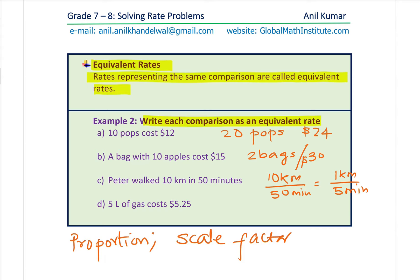The last one: 5 liters of gas will cost $5.25. You could write this as dollars per liter — $5.25 divided by 5 liters — which comes to $1.05 per liter. So you could write it the other way also. Rates have units — it could be written as 5 liters of gas costs $5.25, or $5.25 will buy 5 liters, or per liter the cost is $1.05. Either way it can work.